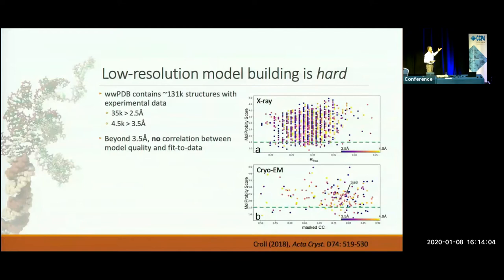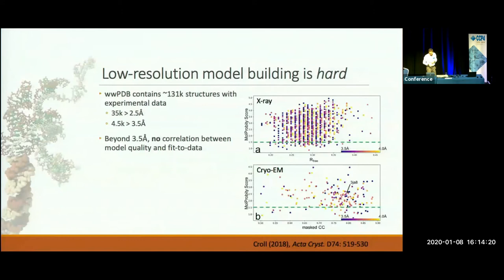The big picture to take home from this is that at these resolutions, there is no correlation between model quality and the fit-to-data. You can get very low R-factors with a terrible model, and very high R-factors with a model with very good geometrical parameters. The whole problem with low resolution is that there are many, many ways to overfit your data, and only a small fraction of those are real solutions.